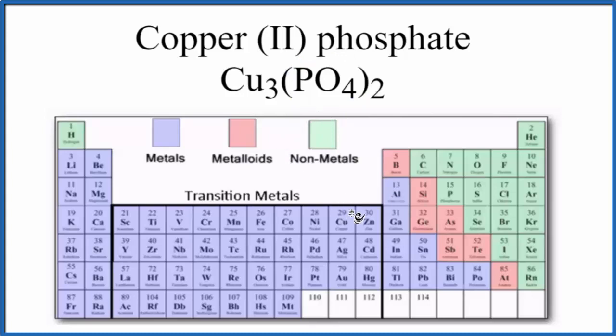So on the periodic table, here's copper, that's a metal, and then phosphorus and oxygen, those are non-metals. So we have a metal and non-metals, that's going to be an ionic compound.